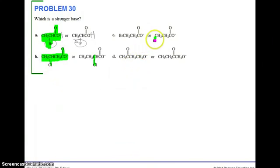For C, this one has an electron withdrawing group. This one does not, therefore this is a stronger acid. The weaker acid makes the stronger base. And for D, look at the similarities and differences. The ketone group is two carbons over from the oxygen and here the ketone group is three carbons over. Remember the weaker acid has the stronger base. This is your weaker conjugate acid, so this is the stronger base.